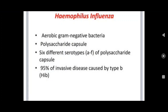Haemophilus influenzae is an aerobic gram-negative bacteria with a polysaccharide capsule. It has six different serotypes, and 95% of invasive disease is caused by type B, that is Hib.